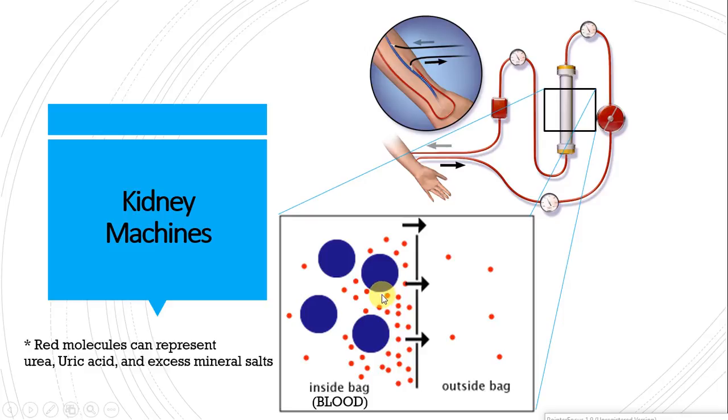The red ones are everything that we want out. Again, we talked about urea, uric acid, mineral salts, and all that sort of stuff.